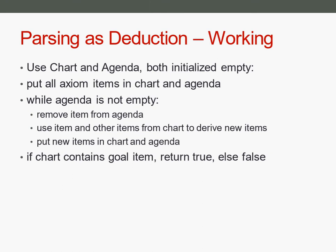The general working of parsing as deduction uses a chart — like the table we have seen before in our parsers. We also have an agenda, which contains new items we want to try out to derive further new items, so that we are not applying the same items over and over again — the agenda contains only new items we haven't tried yet. At the beginning, we use all axioms to initially derive items, and we put all new items into both the chart and the agenda.